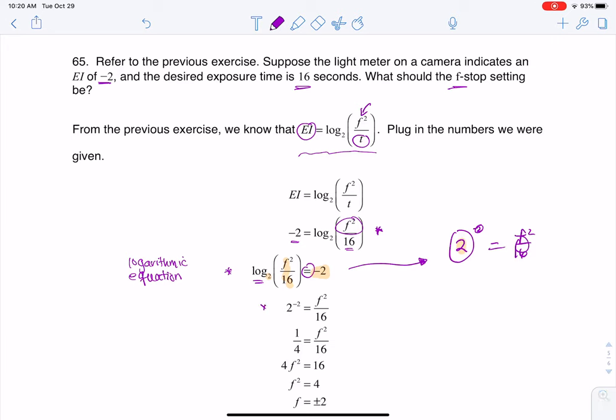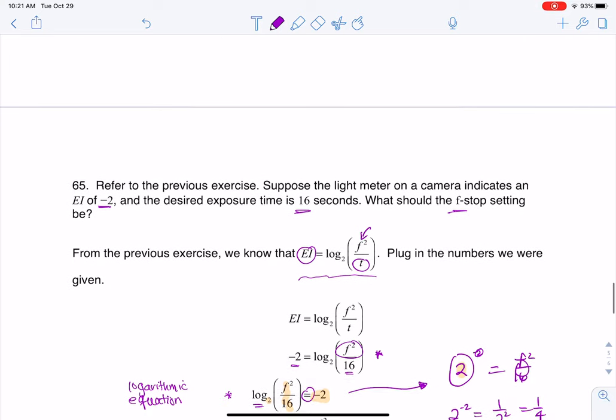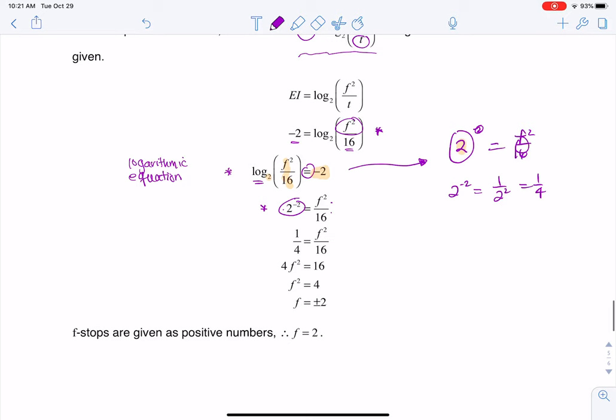Now, when I clean that up a little bit, you see I'm at this level: 2^(-2) is equal to f² over 16. Well, 2^(-2) is the number 1/4, because if you remember, 2^(-2), that's like saying 1 over 2², which is 1/4. So that's where I'm getting this 1/4 over here. And that's equal to f² over 16.